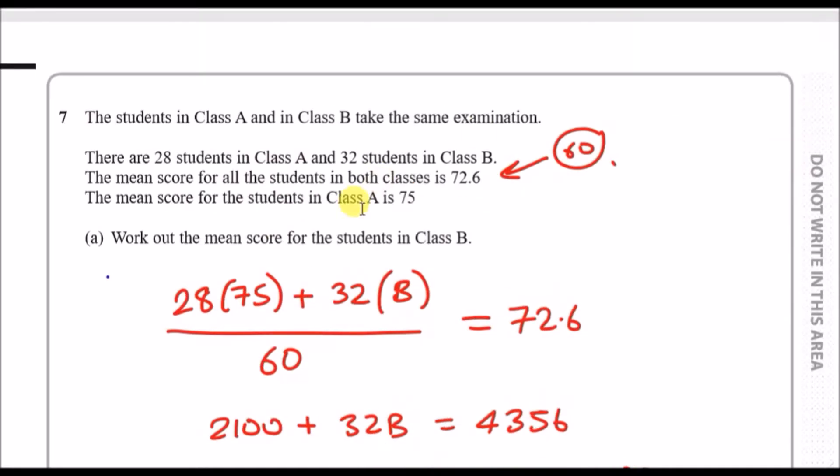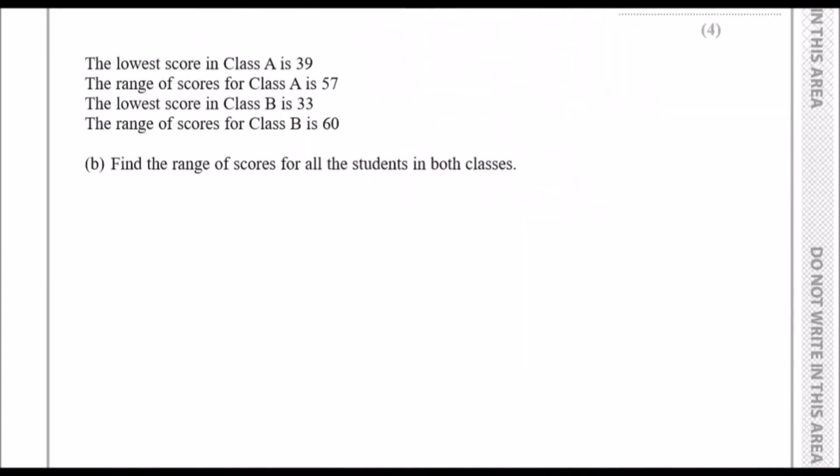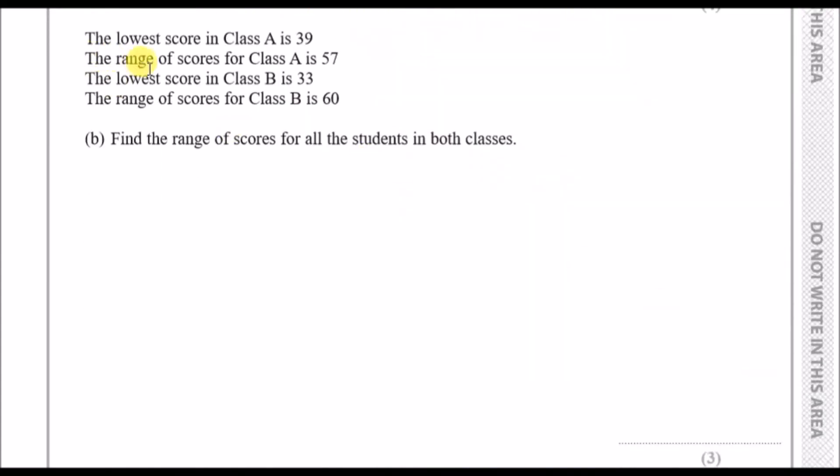Part B. The lowest score in class A is 39, and the range of scores for class A is 57. Range just means the difference between the biggest and smallest number. The lowest score in class B is 33, and the range is 60. Find the range of all the students in both classes.